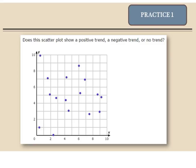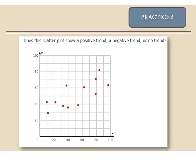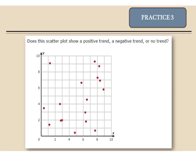Practice 1. Is this positive, negative, or no trend? Does this scatter plot show a positive, negative, or no trend? Practice 3. Does this scatter plot show a positive, negative, or no trend?